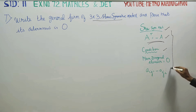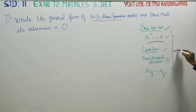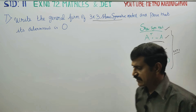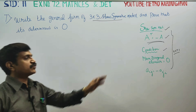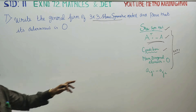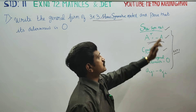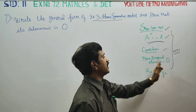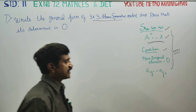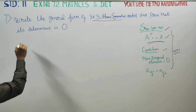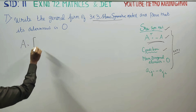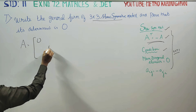This is from reference of exercise number 7.1. For a skew symmetric matrix, the condition is the main diagonal is 0 and A-i-j equals minus A-j-i. The general format of a skew symmetric matrix has the main diagonal all zeros.